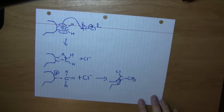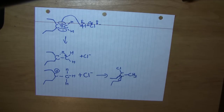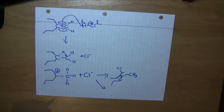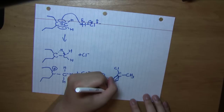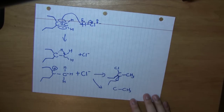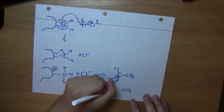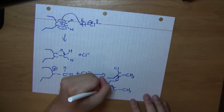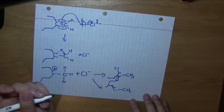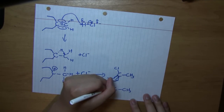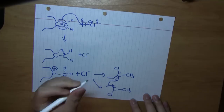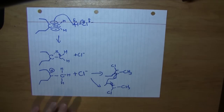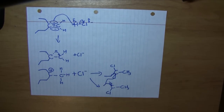That would be the product if we had the chlorine attack from the top side. But what about if we had an attack from the bottom side — the other side of the carbon? We would get something different. Now if you make 3D models of these two molecules, you'll see that they don't overlap each other. Instead, they are non-superimposable mirror images of each other, meaning they must be two enantiomers.